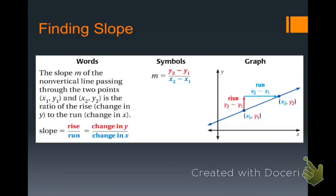If we subtract the x values, we get the run or the change in the horizontal distance. And if we subtract the y values, we get the rise or the change in the vertical distance. Another way to think of slope is rise over run or change in y over change in x.